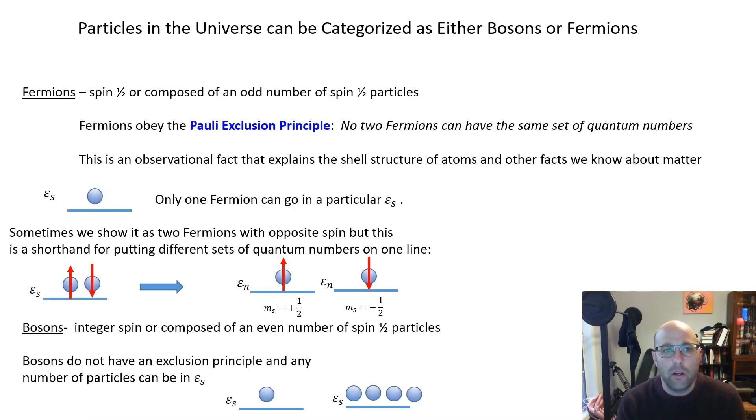I want us to regard it at first essentially as an observational fact that particles in the universe can be categorized according to what spin they have as either fermions or bosons. If you have a particle that either has spin one-half or is composed of an odd number of spin one-half particles, that's called a fermion and it obeys the Pauli exclusion principle, which says that no two fermions can have the same set of quantum numbers. This is a fact that helps us explain the shell structure of atoms, in other words the periodic table of the elements.